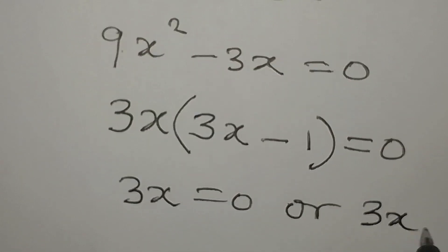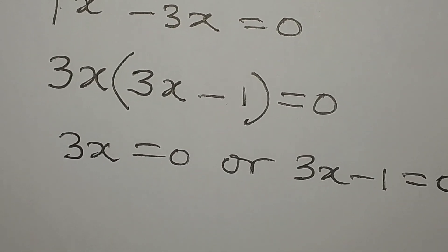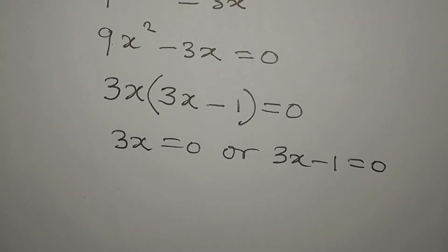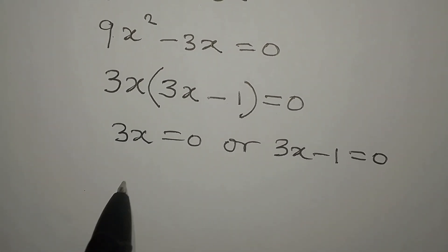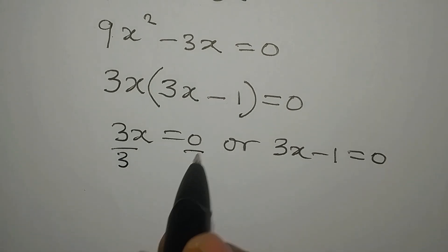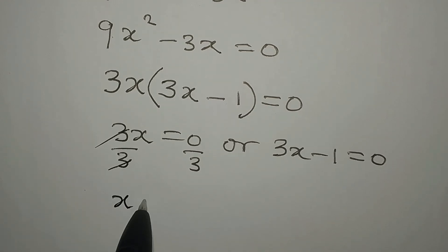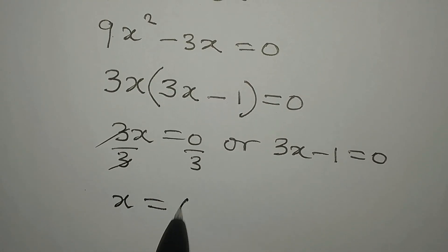If 3x equals 0, we can divide by 3 on both sides, and our x equals 0 over 3, which is 0.